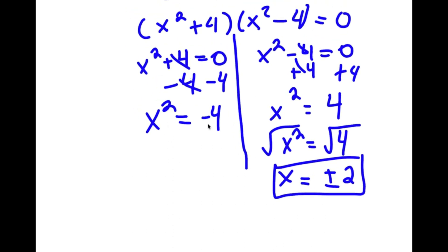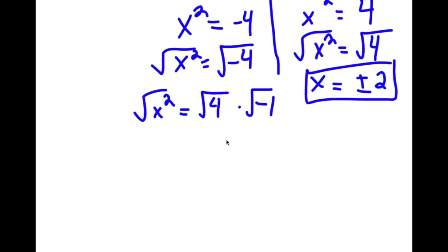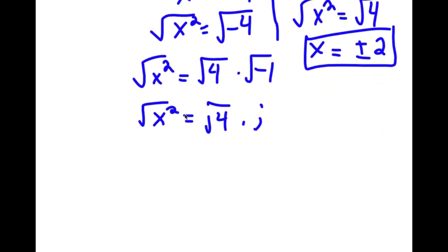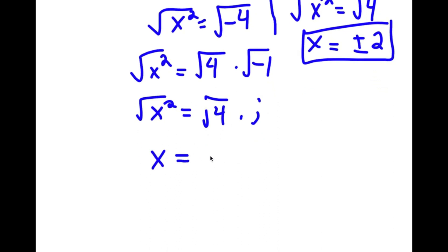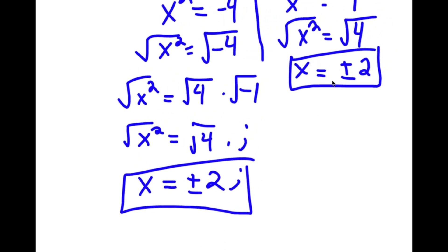For x squared equals negative 4, I take the square root of both sides. I rewrite the square root of negative 4 as the square root of 4 times the square root of negative 1. The square root of negative 1 is i, so I have the square root of 4 times i. Therefore x equals positive or negative 2i, and from the other equation x equals positive or negative 2.